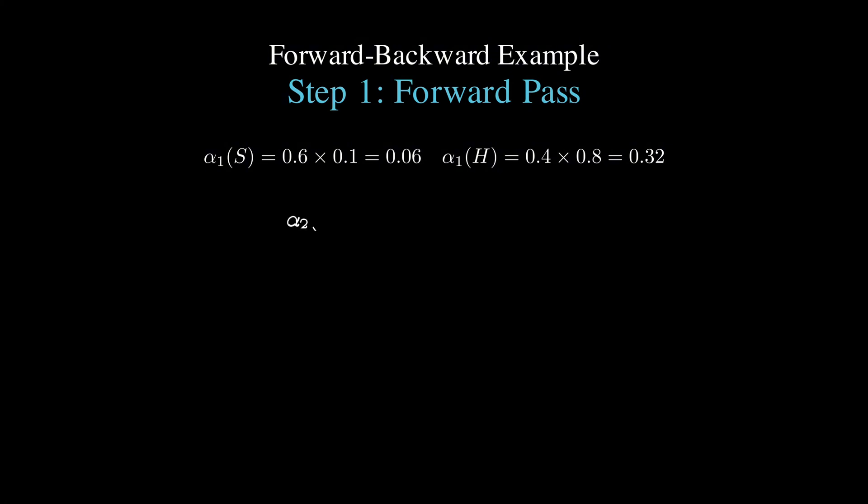Moving to day 2, we compute alpha 2 of sad by taking alpha 1 of sad times a sad to sad times b sad of green, which is 0.06 times 0.7 times 0.4, plus alpha 1 of happy times a of happy to sad times b sad of green, which is 0.32 times 0.4, and when we add these together, we get 0.0512.